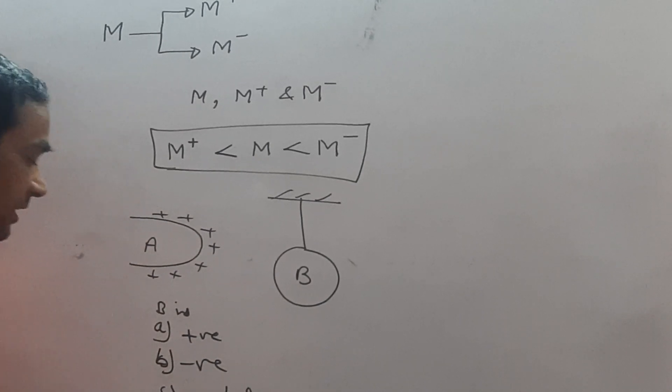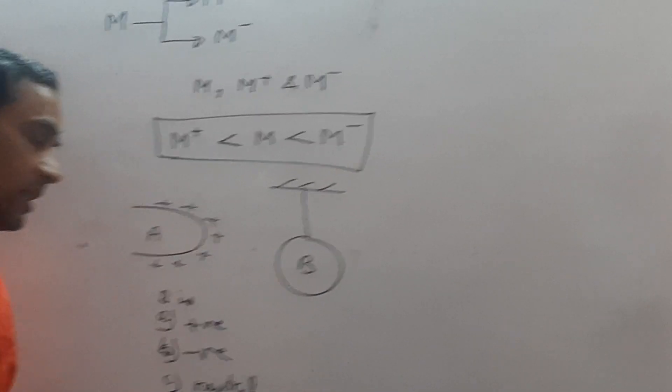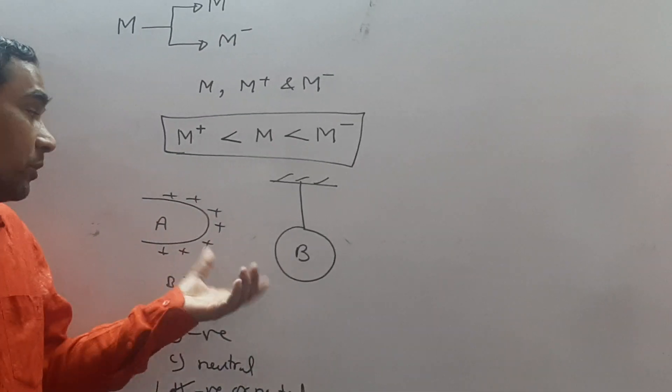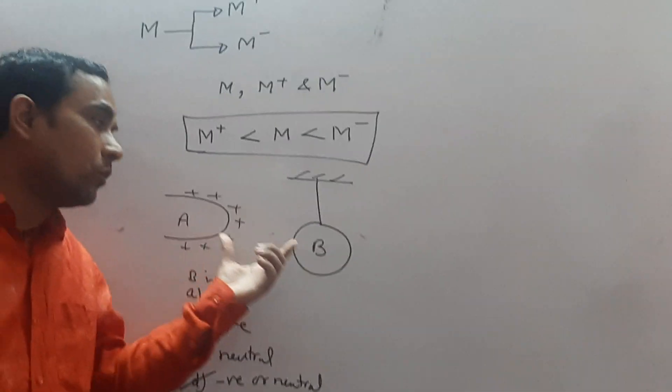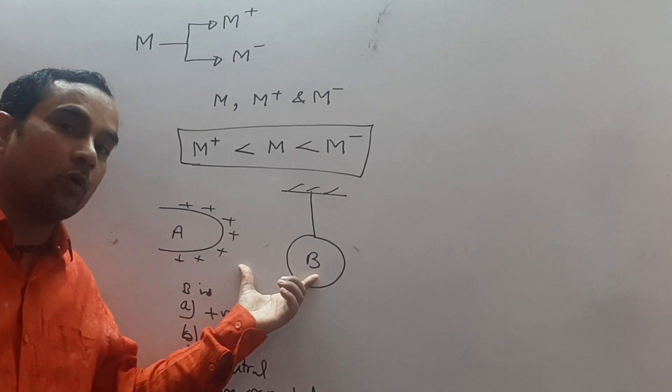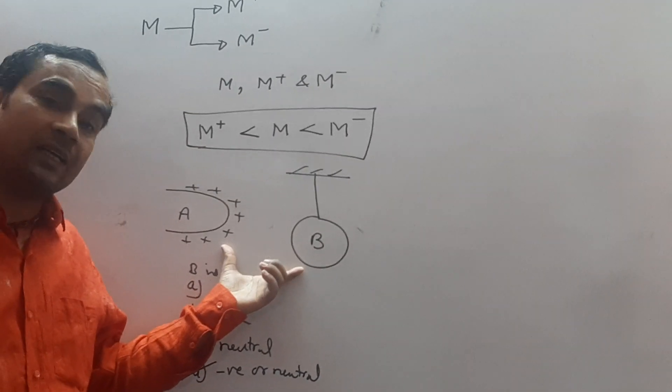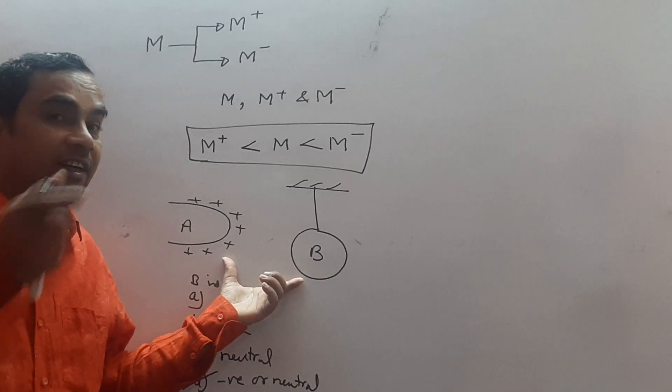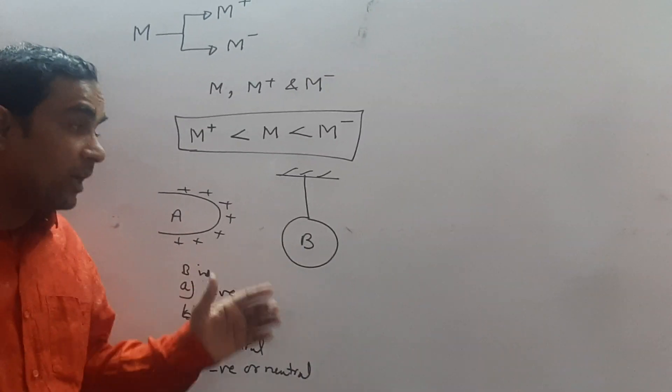So our answer is, it is either negatively charged or neutral. Why? Because when A is positive, B is negative. You know, opposite charges, that is, unlike charges, attract each other. So attraction takes place. But,